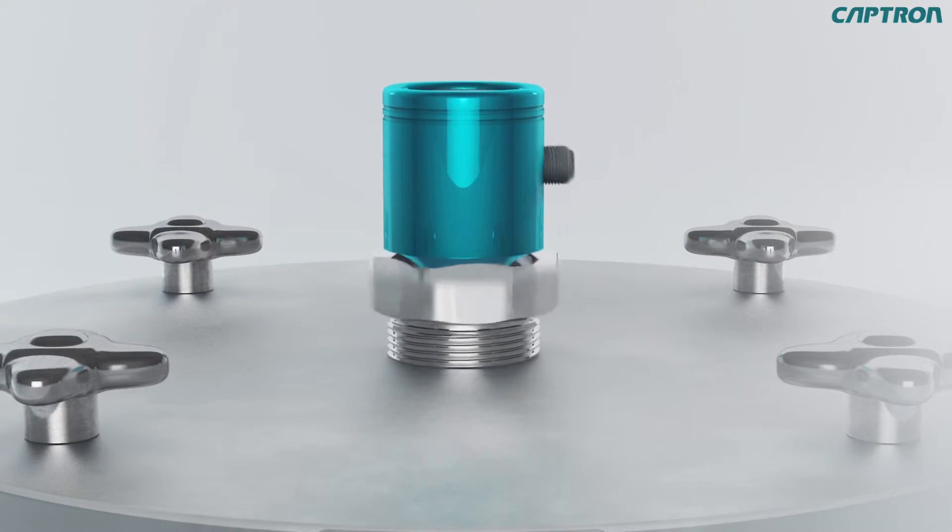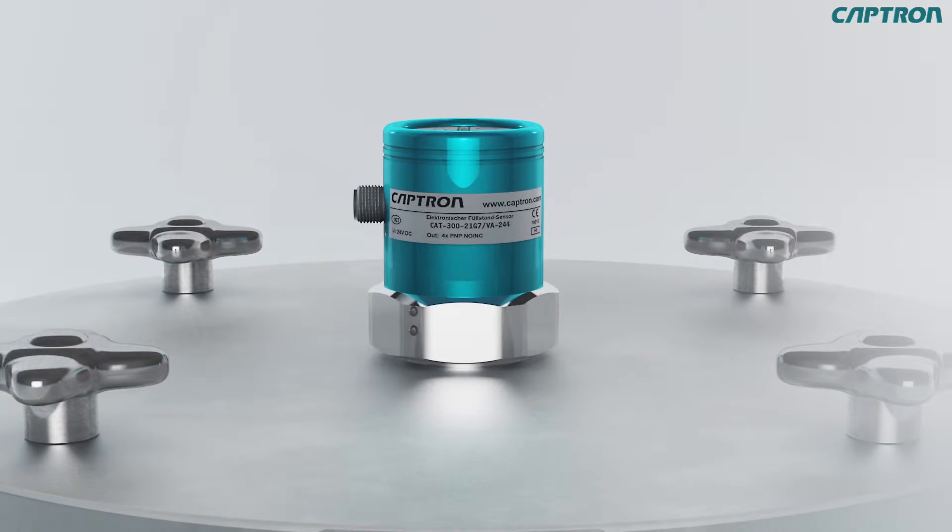Screw the probe into the tank cover. Use a 1.5 mm Allen key to loosen the upper stud screw with two revolutions to the left.